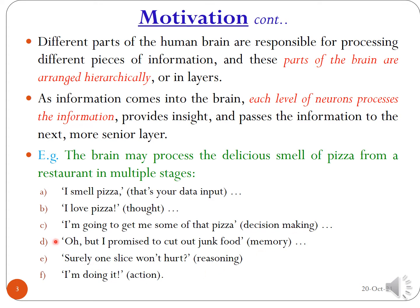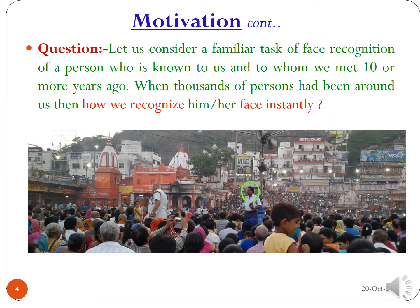The next stage: Oh, but I promised to cut out junk food — this is our memory. On the basis of memory, we decide something. Then: Surely one slice would not hurt — this is reasoning. And finally: I am doing it — this is the action. So the brain processes the delicious smell of pizza in multiple stages at multiple levels, and this is also the motivation for the neural network.